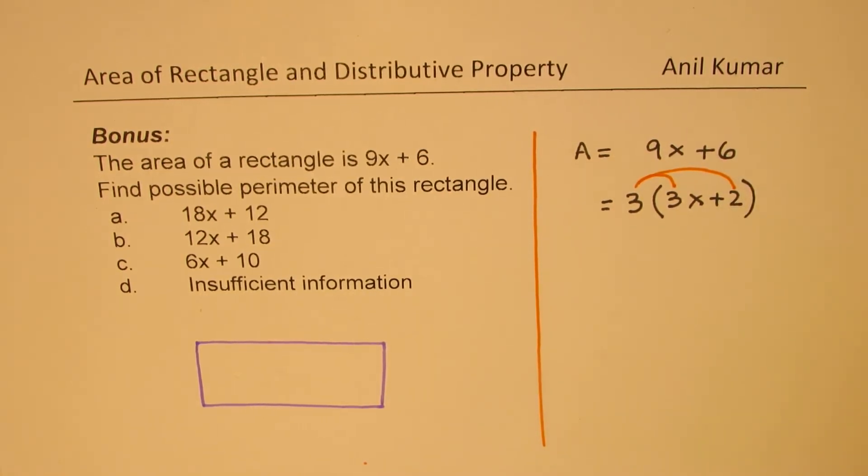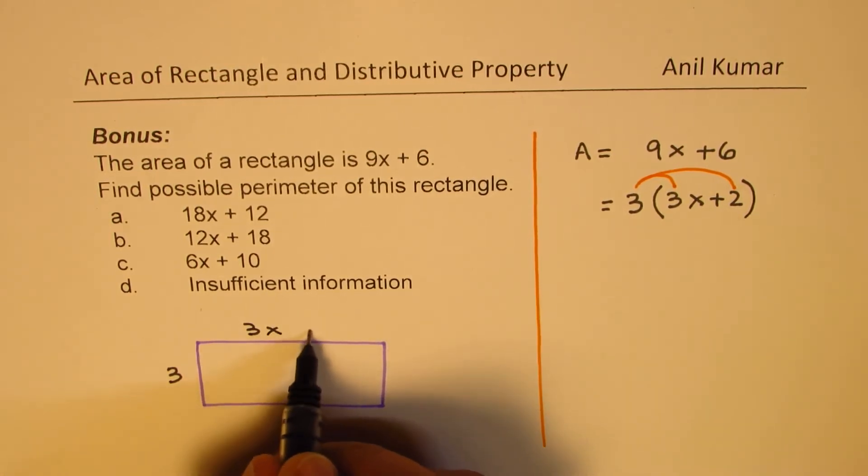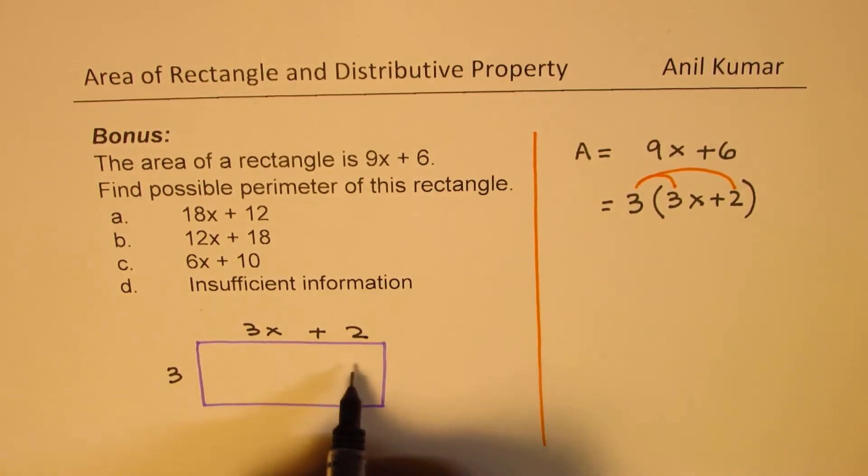It really means that if I have a rectangle whose one side is 3 and the other side is 3x + 2, then that rectangle will represent this particular area.